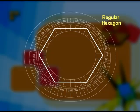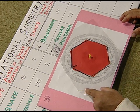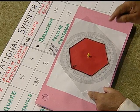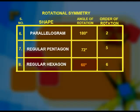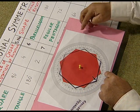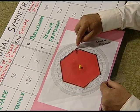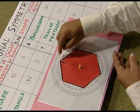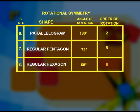Next, we take the example of a regular hexagon. On rotation of 60 degrees, the hexagon coincides with itself. The angle of rotation of a regular hexagon is 60 degrees. In a complete turn, it coincides 1, 2, 3, 4, 5, and finally at the original position — 6 times. Therefore, the order of rotation of a regular hexagon is 6.